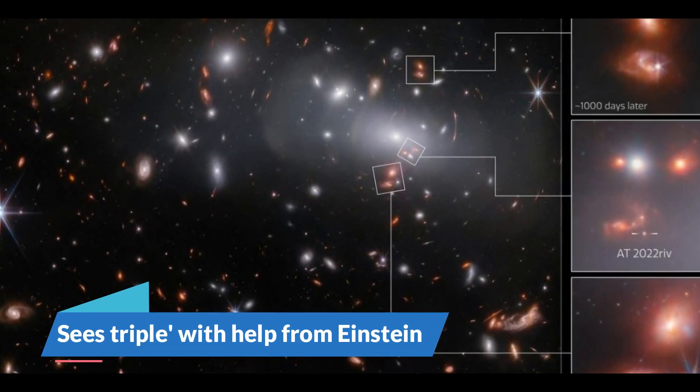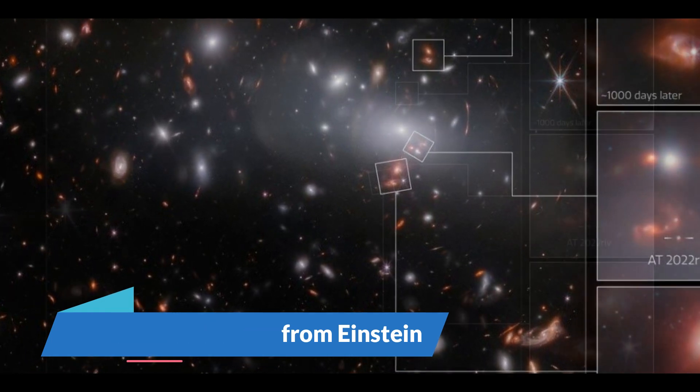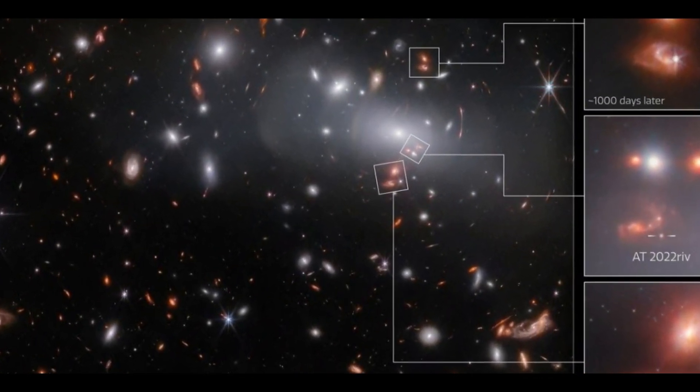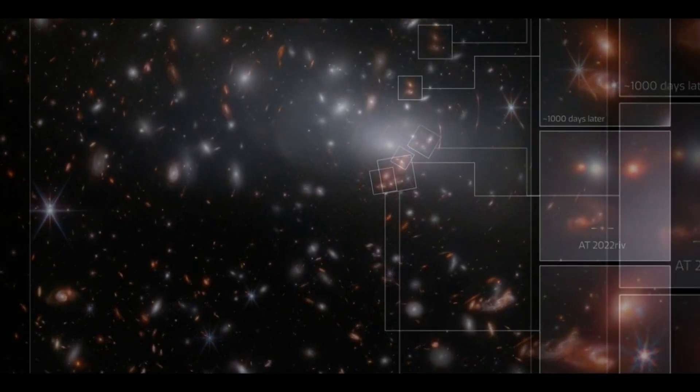Number one, sees triple with help from Einstein. A breathtaking new image from the James Webb Space Telescope depicts a supernova hosting galaxy three times at distinct points in time.